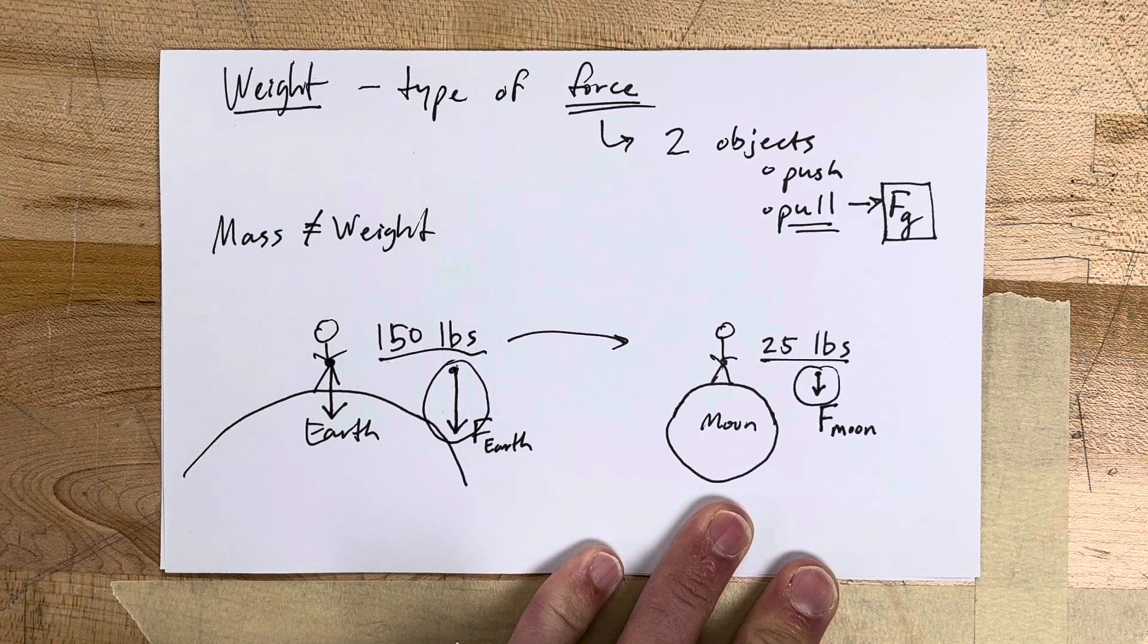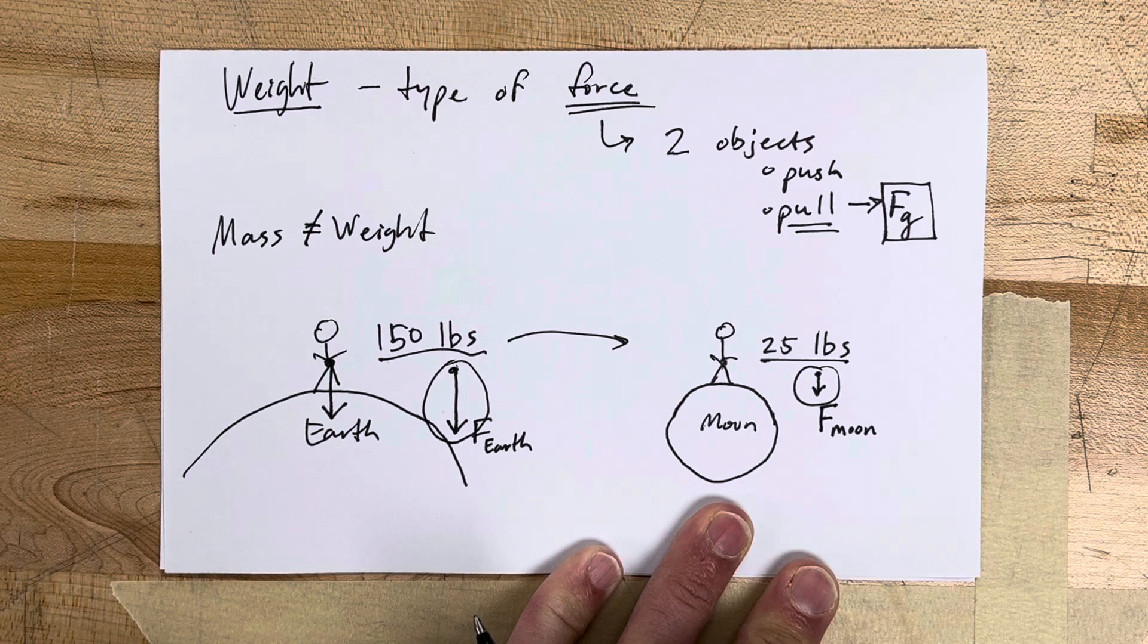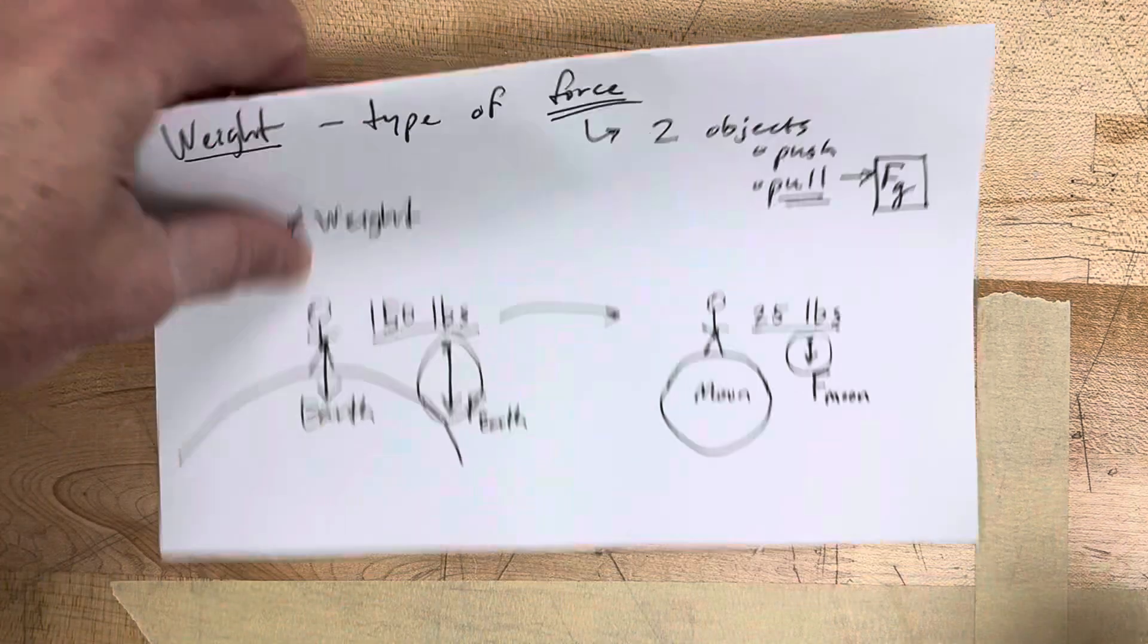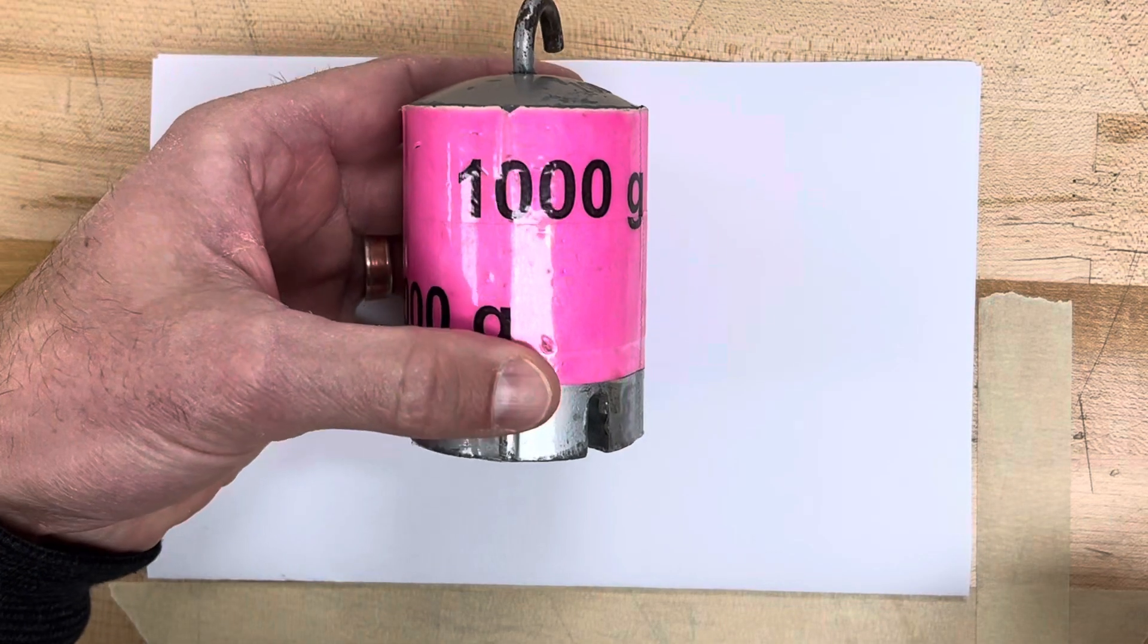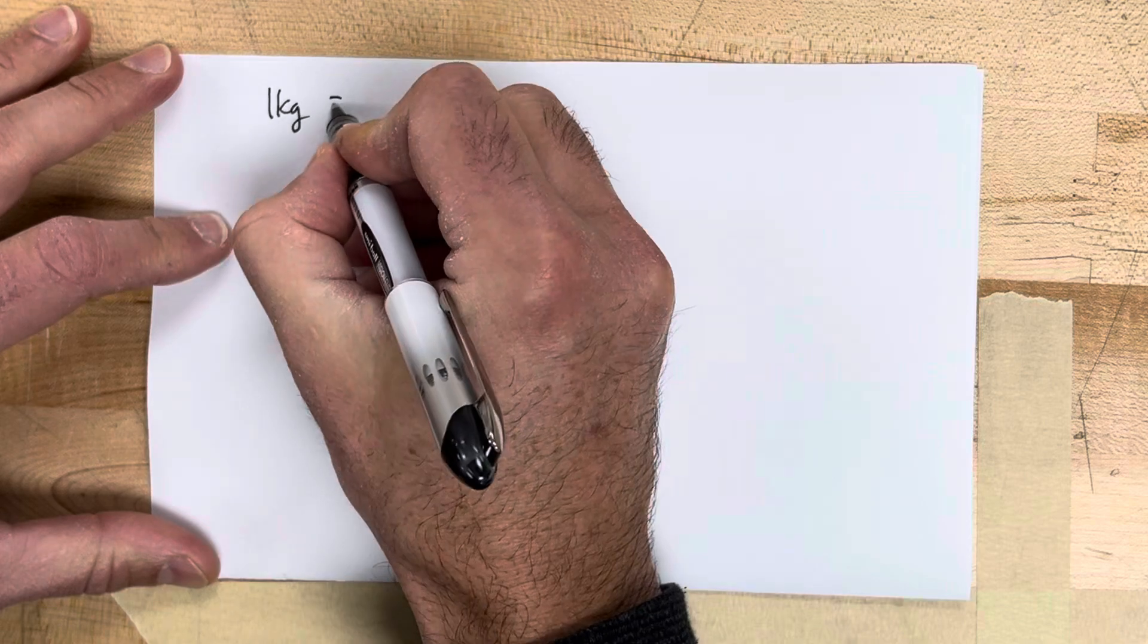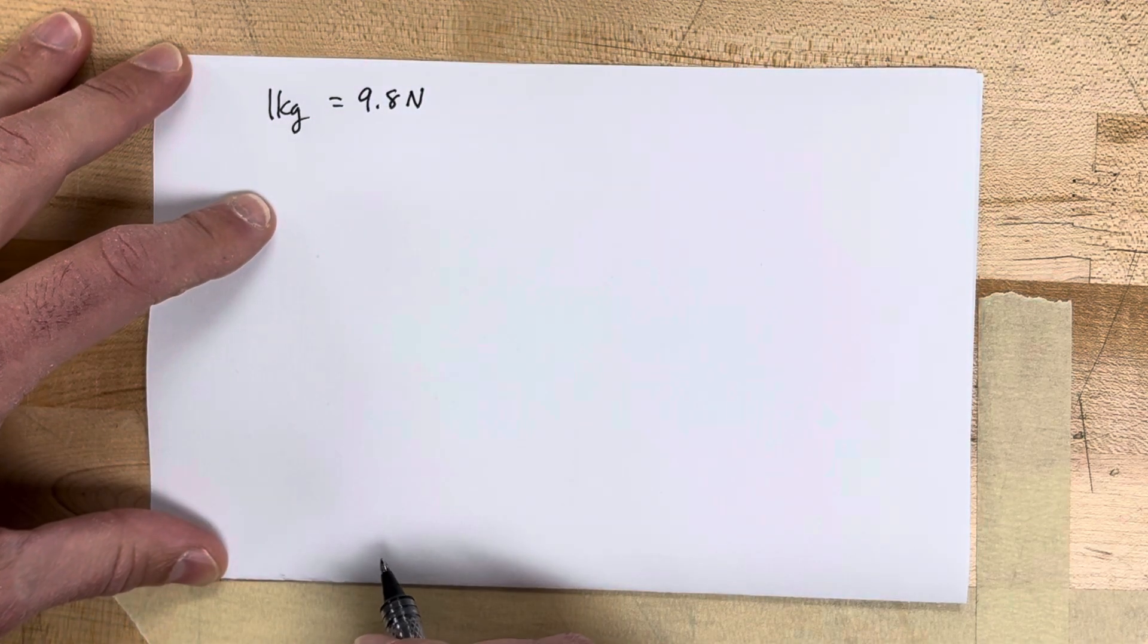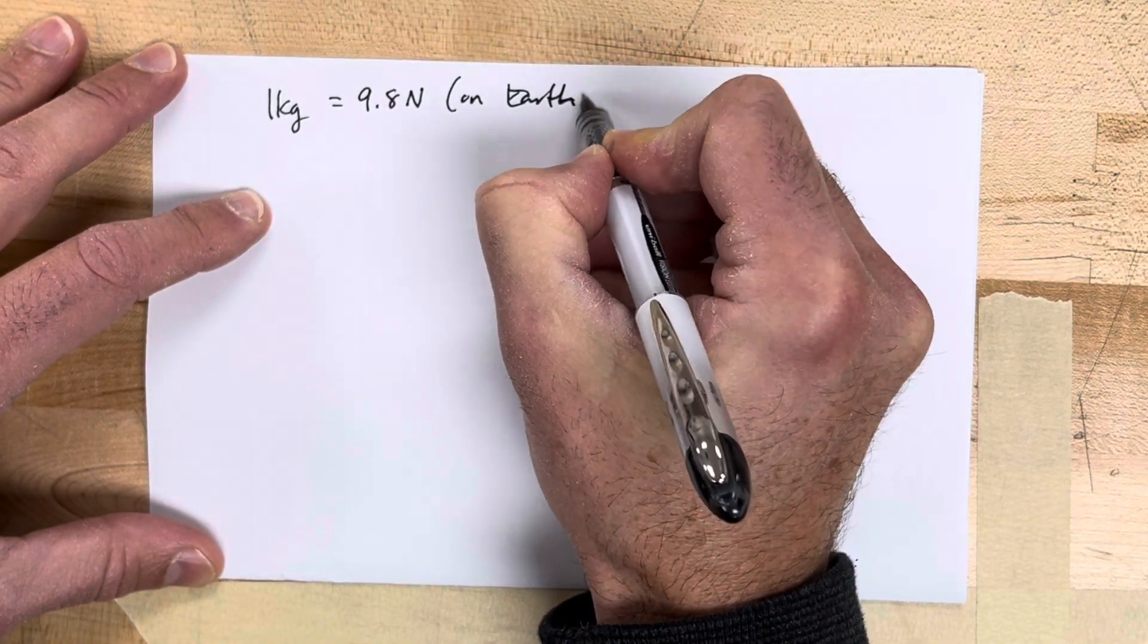Pounds is a type of force. In this class we're going to use newtons to measure force. So how do you calculate the force of the Earth? Well, on Earth, if you have one kilogram, it generates exactly 9.8 newtons of force. That's the number we're going to use.